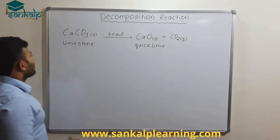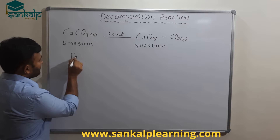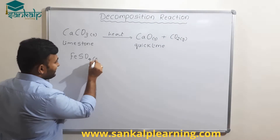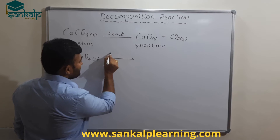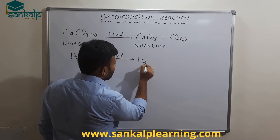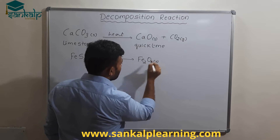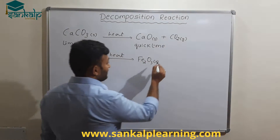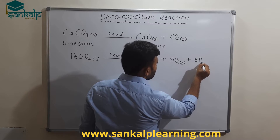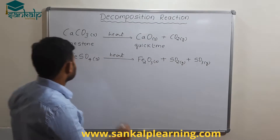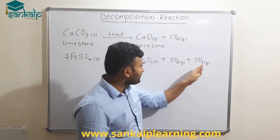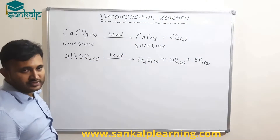One more reaction: ferrous sulfate, FeSO4, which is green in color. When ferrous sulfate is heated, the green color disappears and it gives ferric oxide (Fe2O3), sulfur dioxide, and sulfur trioxide. So it should be 2FeSO4 giving Fe2O3 plus SO2 plus SO3. Let's check if it's balanced — yes, the reaction is balanced.